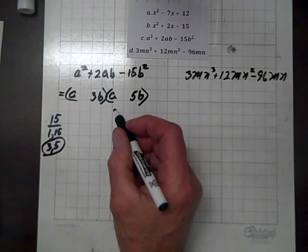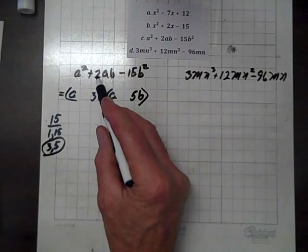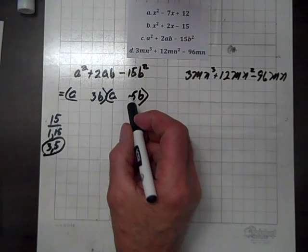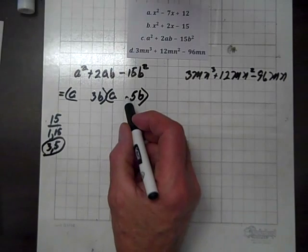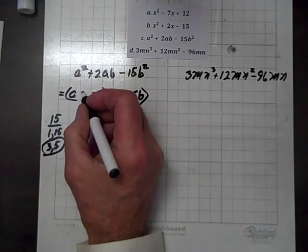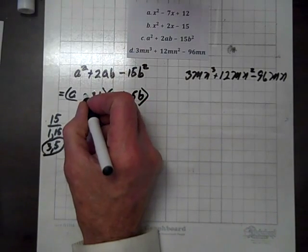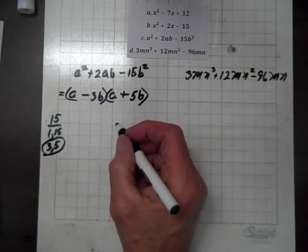And now the issue is who gets the positive? Well, since the middle term is positive, then the larger of the two factors, 3 or 5, will get the positive. So that means 5 gets the positive. And since these two expressions must have different signs, the 3 will get the negative.